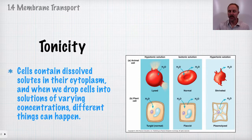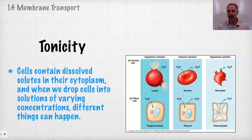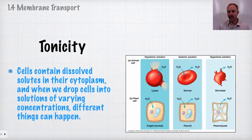In a hypertonic environment, the cell wall isn't much help — plant cells still lose water and we say they're plasmolyzed, pulling away from the cell wall. In an isotonic solution, the state of equilibrium means the amount of water moving in equals the amount moving out. Plants prefer to be turgid, so in isotonic conditions the plant cell is described as flaccid — it has reached the point of equilibrium.